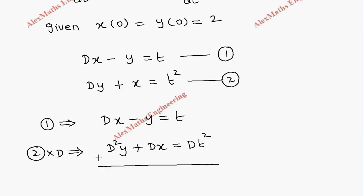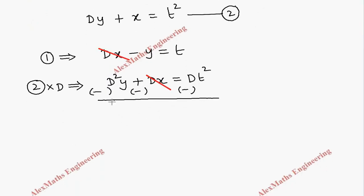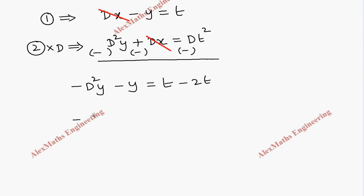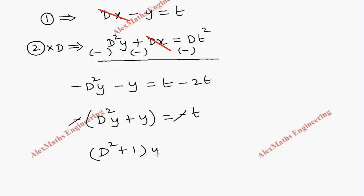Now I am going to subtract both equations, so I change the sign of all the second equation's terms. The Dx and minus Dx cancel. After cancelling, we are left with minus D squared y minus y equal to t minus 2t. Taking the negative sign common gives D squared y plus y equal to minus t, and then dividing through: D squared plus 1 times y equals t.